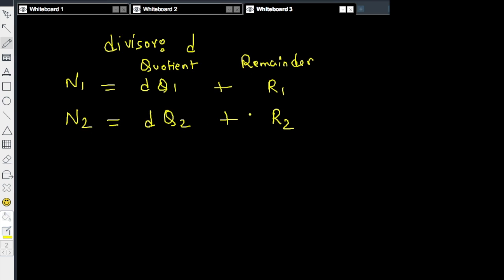Now let's multiply n1 n2. So if we multiply n1 n2 we have D times q1 plus r1 times D times q2 plus r2.